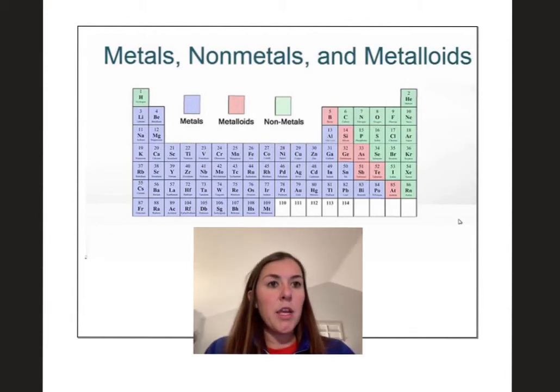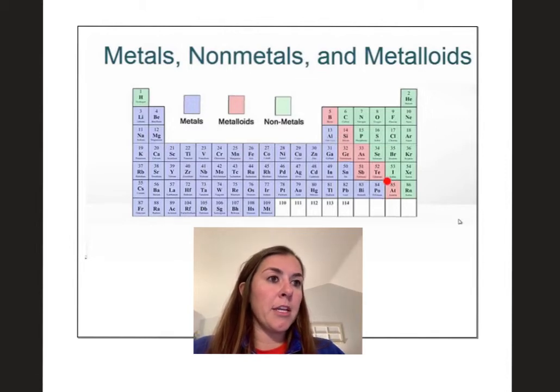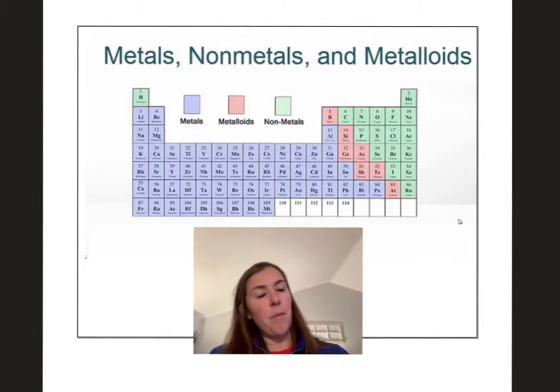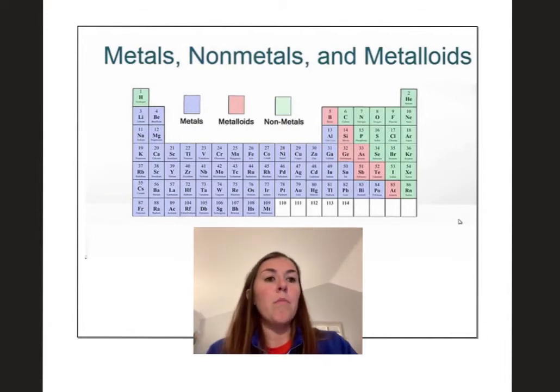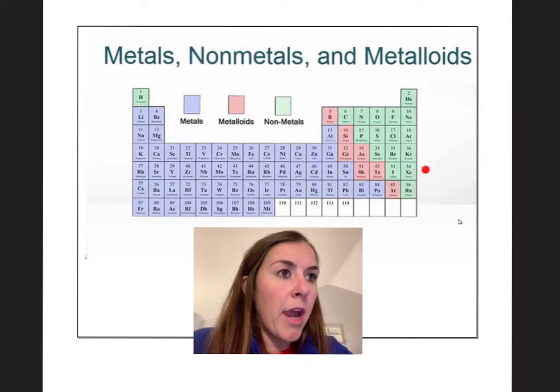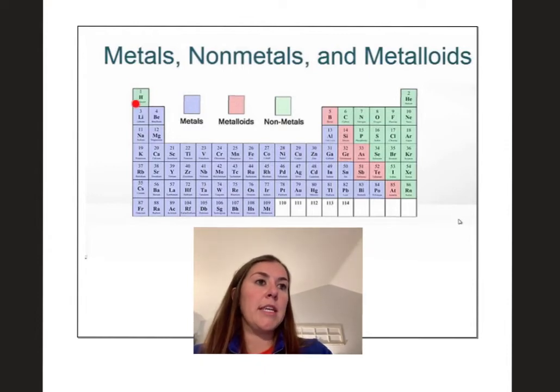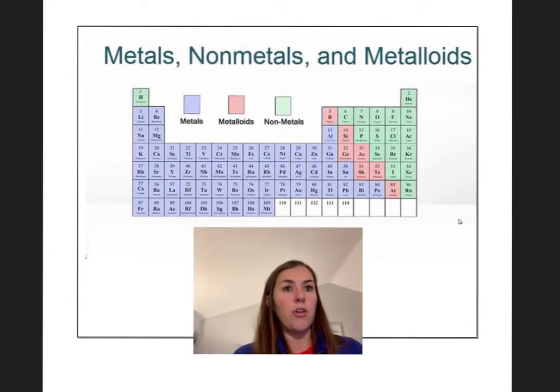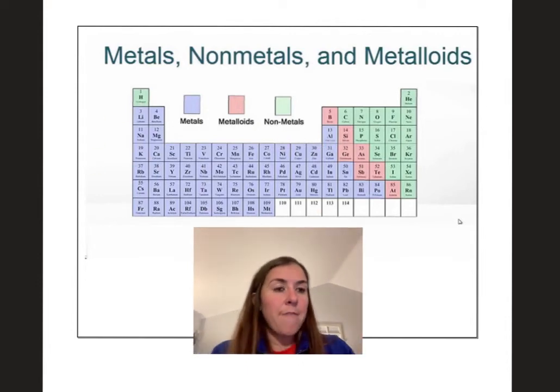All right, just a reminder from last unit, we have our periodic table. This right here is the metalloid staircase. So these kind of pinkish red elements have some properties of metals, some properties of nonmetals. All of these purple elements are metals. So most of the elements on the periodic table are metals. Everything to the right of the staircase are called nonmetals, except don't forget about hydrogen. Hydrogen is kind of sneaky. He really belongs maybe over here with the other nonmetals. We'll learn more why he's on this side. But basically everything to the left is a metal except for hydrogen. And these green ones above the staircase are the nonmetals.